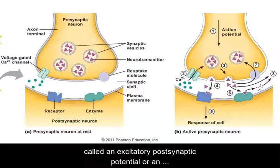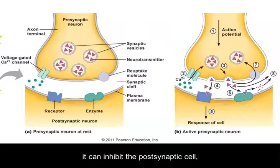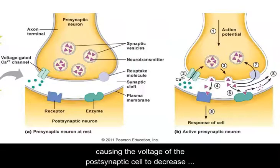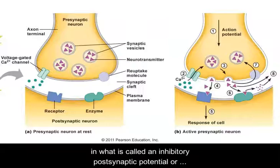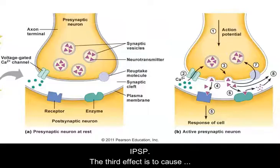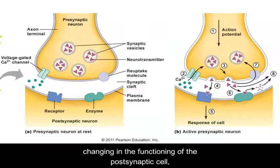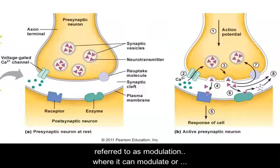Second, it can inhibit the postsynaptic cell, causing the voltage of the postsynaptic cell to decrease in what is called an inhibitory postsynaptic potential, or IPSP. The third effect is to cause changes in the functioning of the postsynaptic cell, referred to as modulation, where it can modulate or modify the excitability of the postsynaptic cell, making it more or less sensitive.